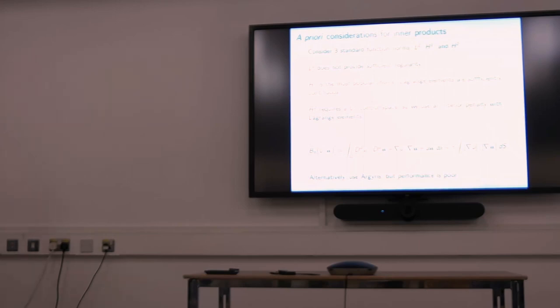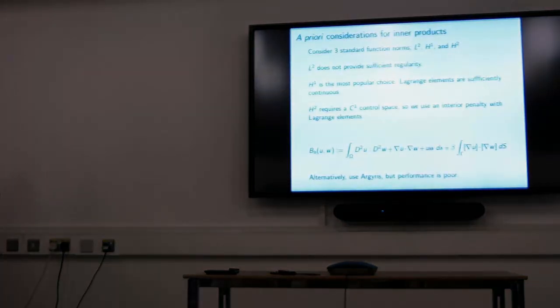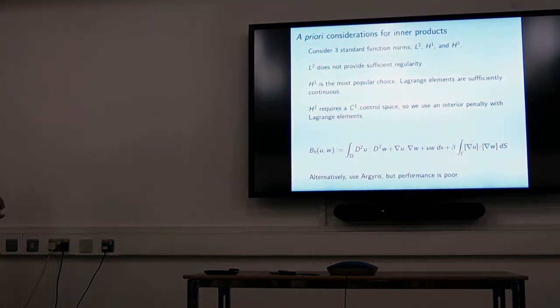Which inner products would we use? We have three obvious inner products to try on functions, on the space of diffeomorphisms: L2, H1, H2. L2 doesn't work - we don't get sufficiently continuous gradients, so that's right out. H1 is popular, we have a finite element that's conforming with it, which is Lagrange, because we need one degree of continuity, C0. Then we want to try H2, that's the next inner product to try.